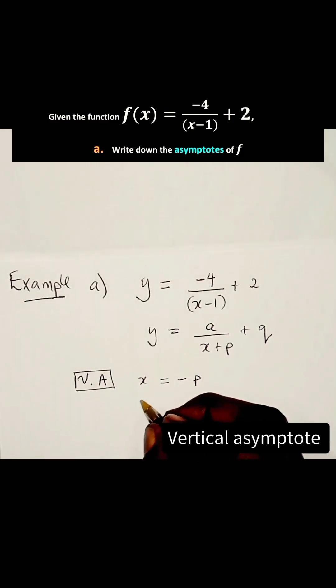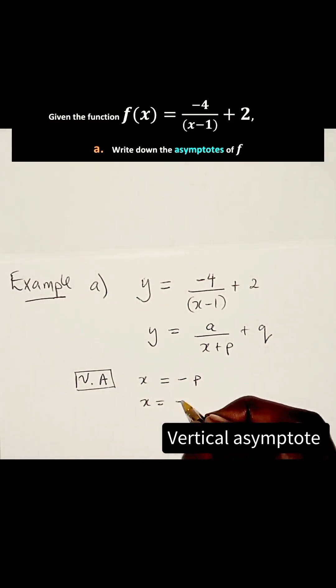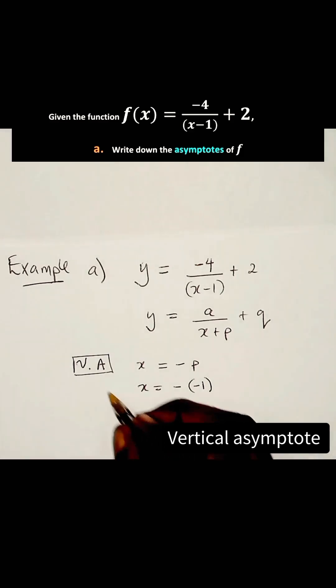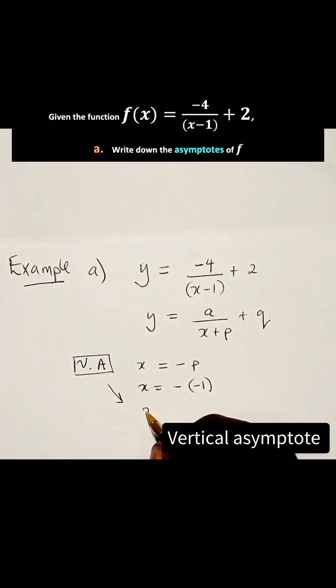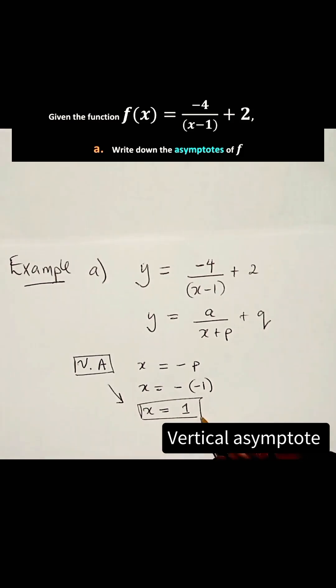So we say X is equal to minus minus 1. So now we say the vertical asymptote is X is equal to 1. That is the equation of that asymptote.